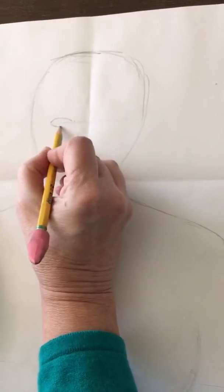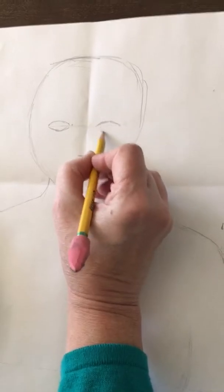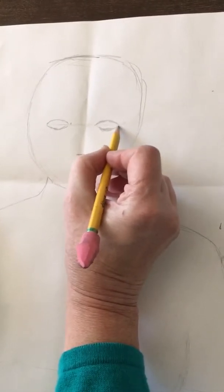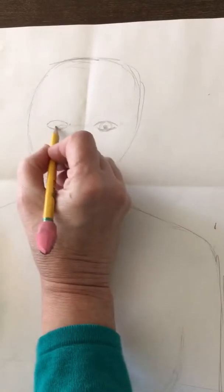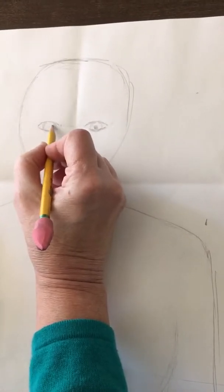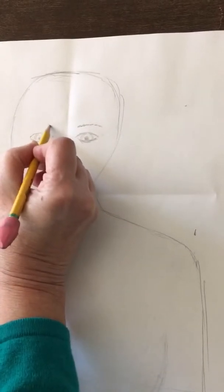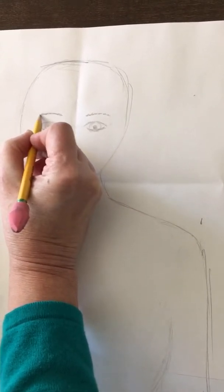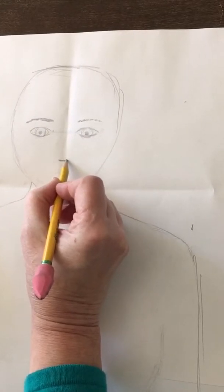And I do, I call it a football shape. Most kids are just fine doing that. On the nose, I start with a little round shape here.